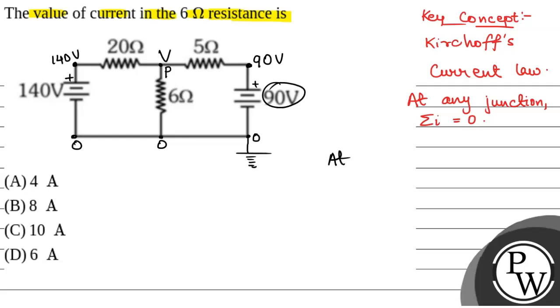Now, we will see, at point P, applying KCL, that is, Kirchhoff's Current Law. At point P, we will have V minus 0 by 6.